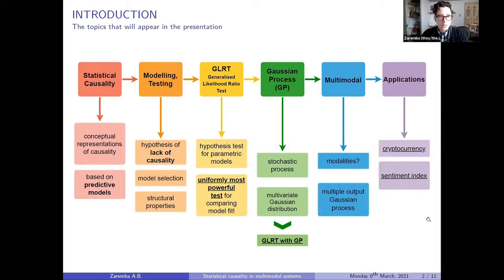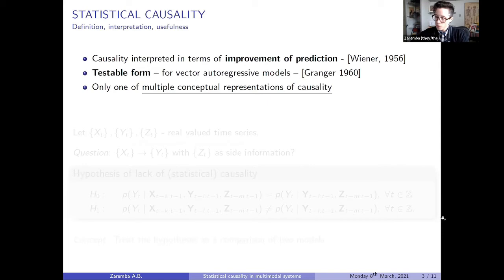So, first of all, what is statistical causality? As I mentioned, it is only one of many conceptual representations of causality. Which is important to mention because there are many and each of them actually models a different thing. Statistical causality is based on predictive models. In 1956, Wiener suggested or introduced the idea that causality can be interpreted in terms of improvement of prediction. In 1960s, Granger has proposed a testable form for vector-autoregressive models. And after that, that has often been called Granger causality.